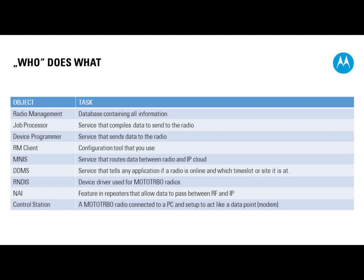The job processor sends this information to the device programmer. The device programmer is the thing that will send the information to the radio through different means. We can program radios over the air using OTAP on certain models, through Wi-Fi if the radio supports it, through a standard USB programming cable, or over the air. All of these programming methods are processed by the device programmer.